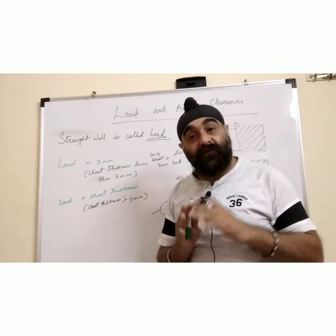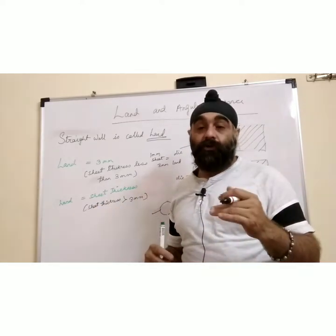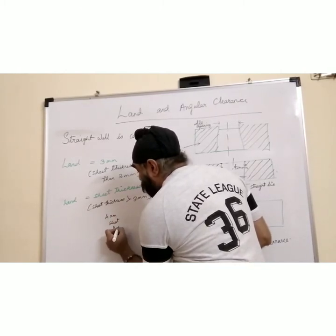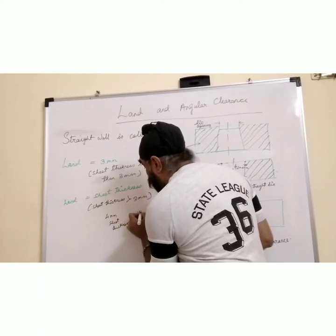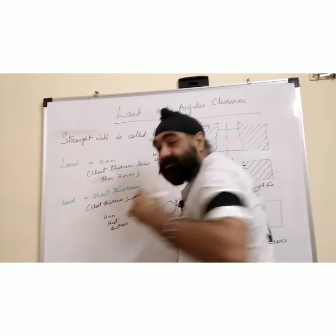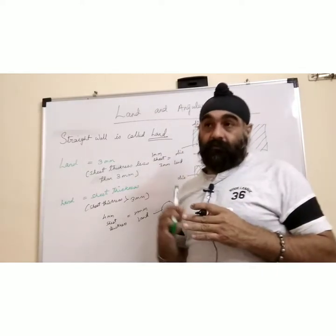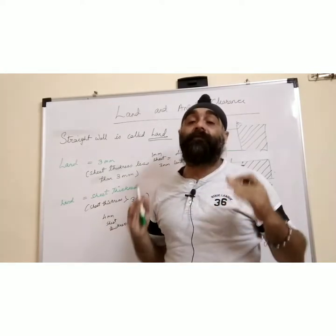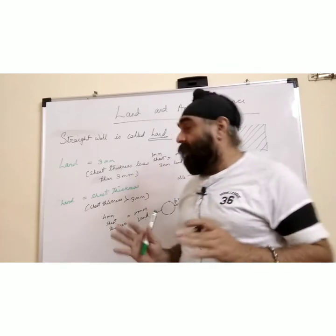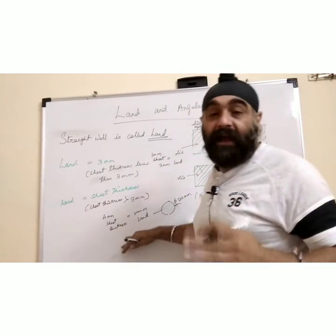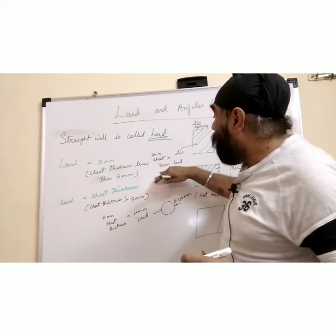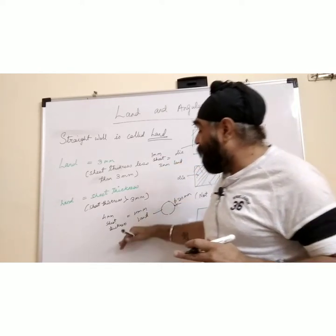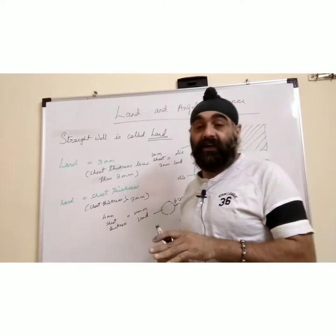Above sheet thickness of 3 mm, where the cutting force is very high, we use a different rule. For example, for 4 mm sheet thickness use 4 mm land. Similarly for 10 mm or 12 mm sheet you give a land of 10 to 12 mm according to the sheet thickness. Remember the general formula: for sheet thickness up to 3 mm, land equals 3 mm; above 3 mm, land equals the sheet thickness.